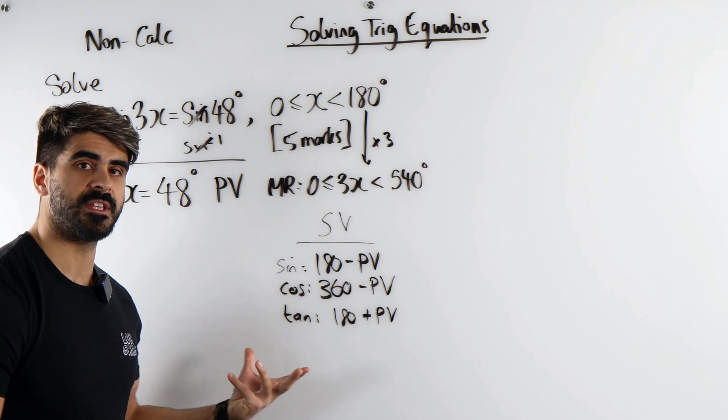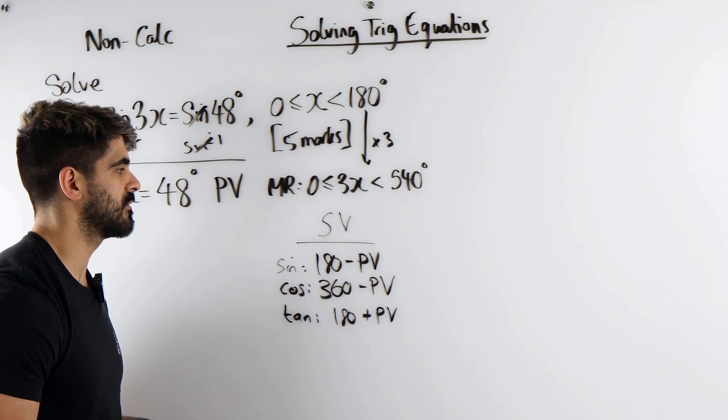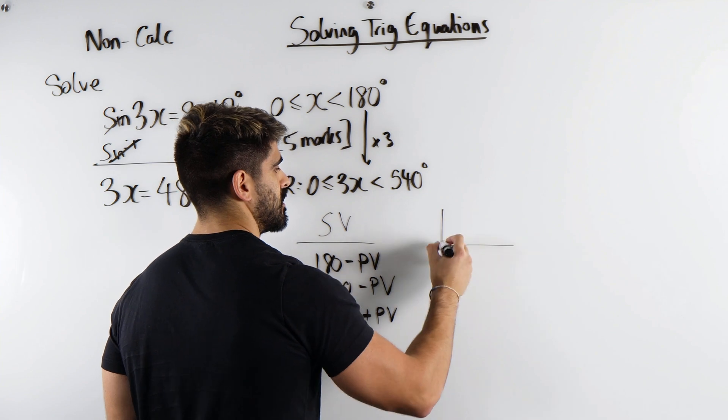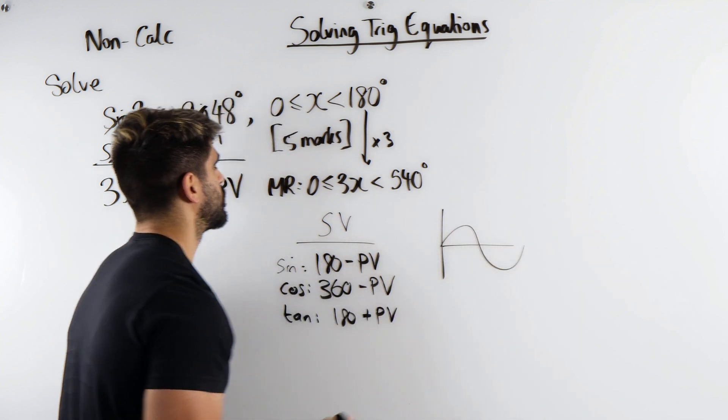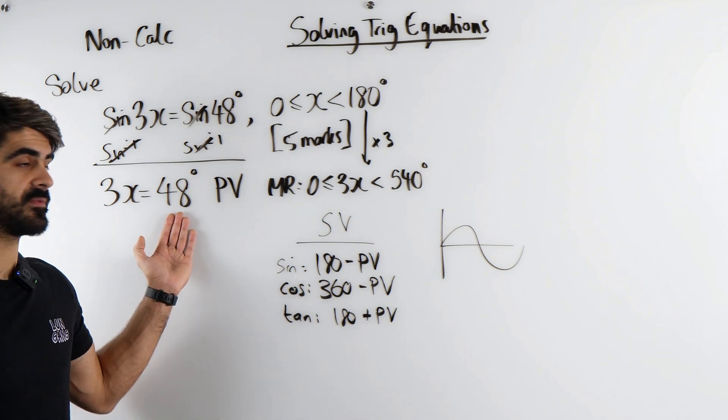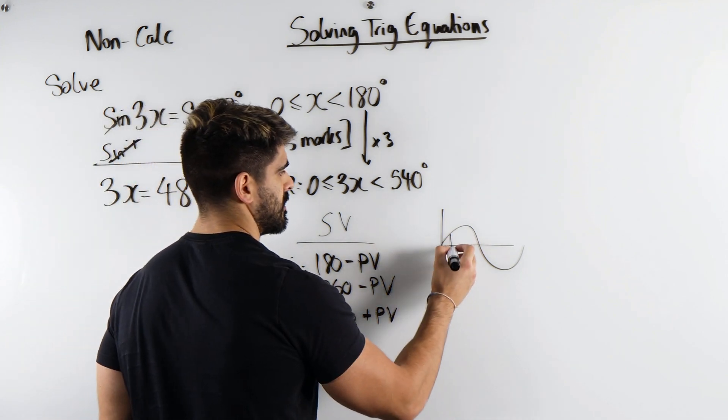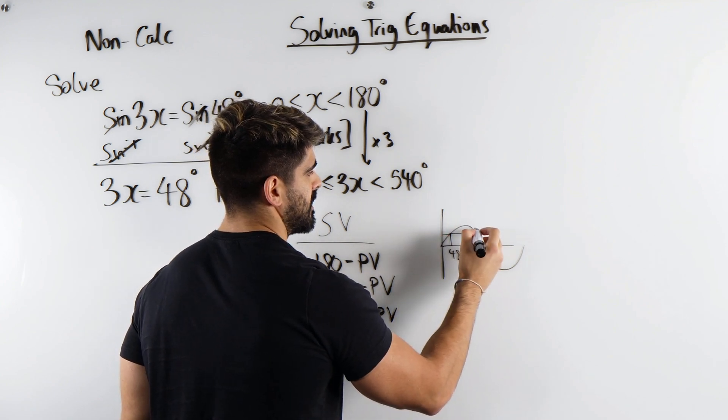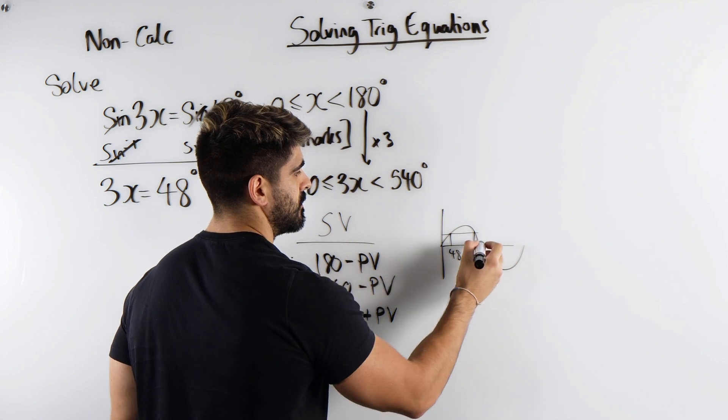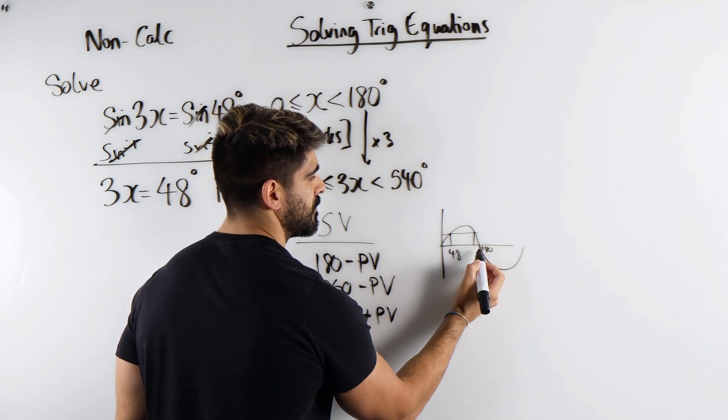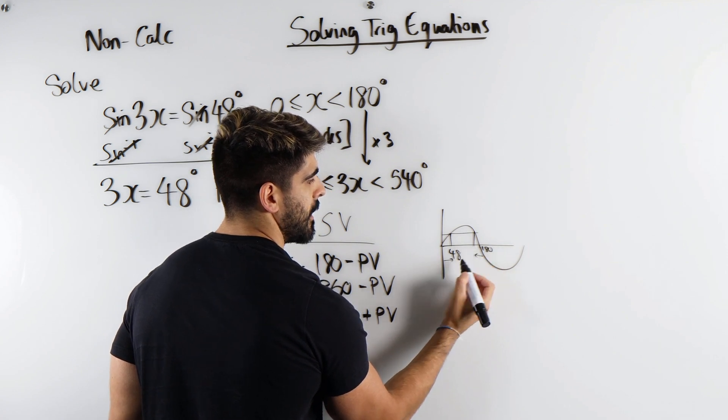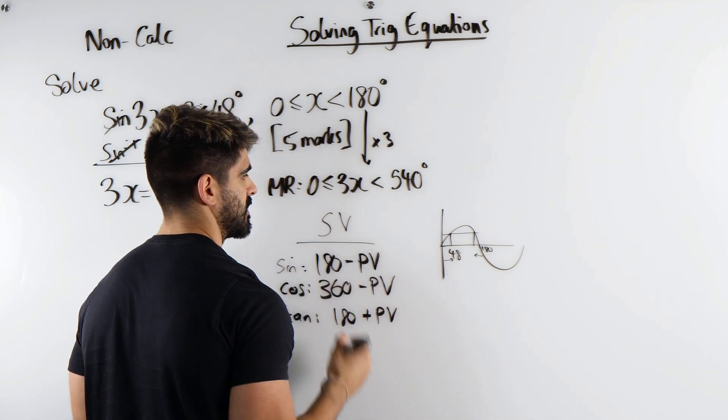Just to show you very quickly why this is the case. Here's your sine graph. When you do inverse sine of a value, you get the first value, that's 48 in this case. That came from here. The other side is the secondary value. Now using symmetry, that's 180. This is going in by 48, so we're going to go back by 48, which is why we do 180 minus the primary value.